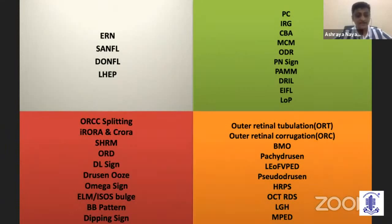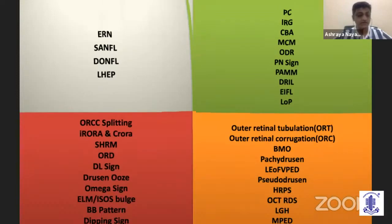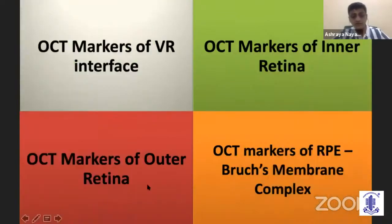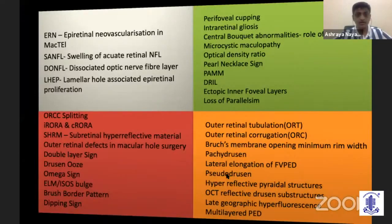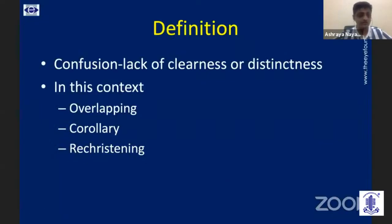Acronyms are very fascinating and can look intellectually exciting to use in our daily practice. But when they become too many, they play their own part in causing confusion in the management of the condition. The dictionary meaning of confusion is a lack of clearness or distinctness. Newer acronyms can be confusing if they are overlapping, or if one is the corollary of the other, or if it is recursive. So let's look at the evidence for each of them.